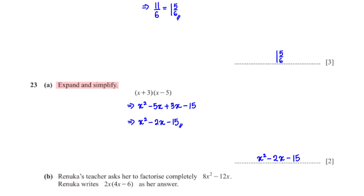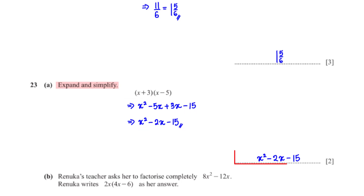Expand and simplify (x + 3)(x − 5). Each term in one bracket multiplies all terms in the other: x × x = x², x × (−5) = −5x, 3 × x = 3x, 3 × (−5) = −15. Grouping like terms: −5x + 3x = −2x. So the answer is x² − 2x − 15.